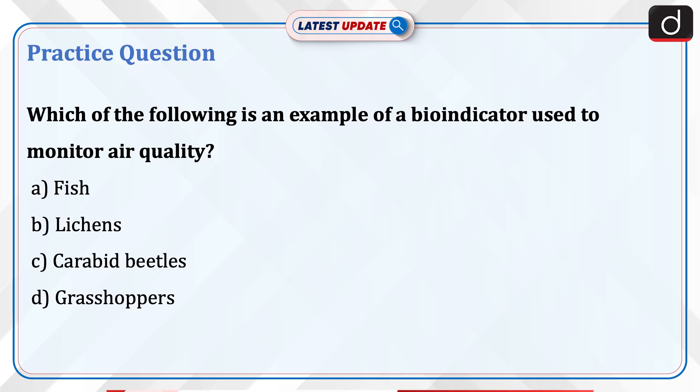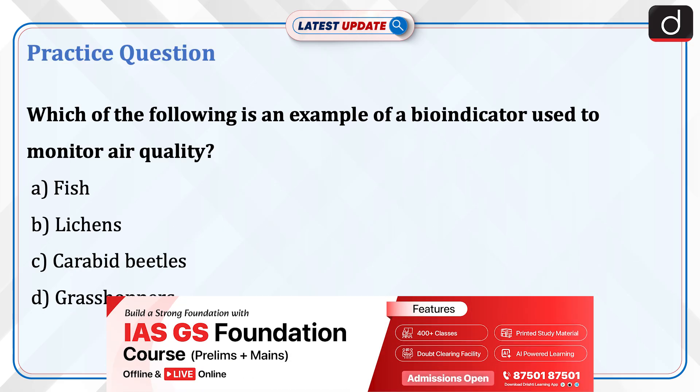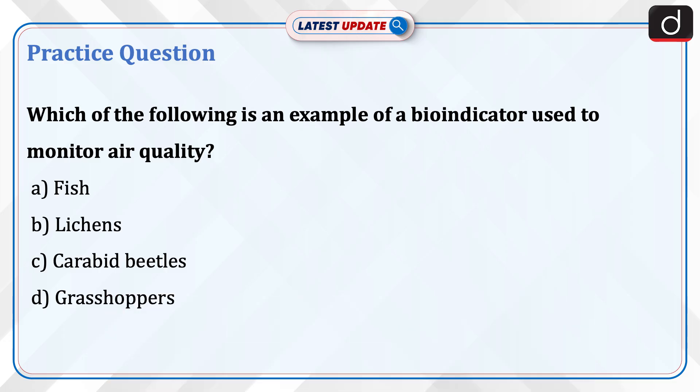Now it's time to do a practice question. Which of the following is an example of a bioindicator used to monitor air quality? A. Fish, B. Lichens, C. Carabit beetles, D. Grasshoppers. Send the answer for this question in the comment section.